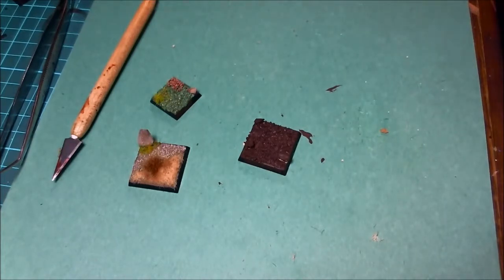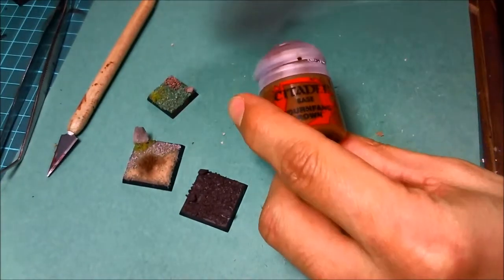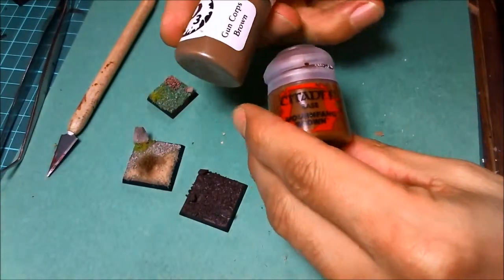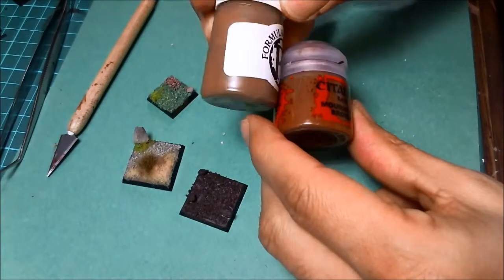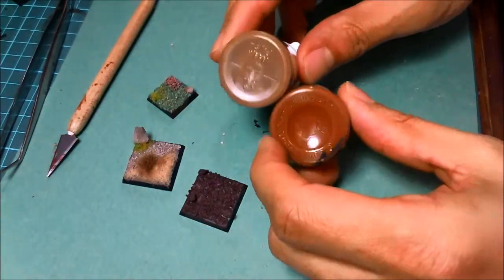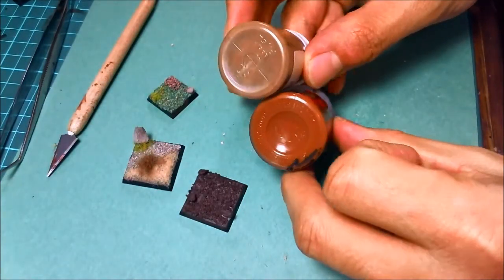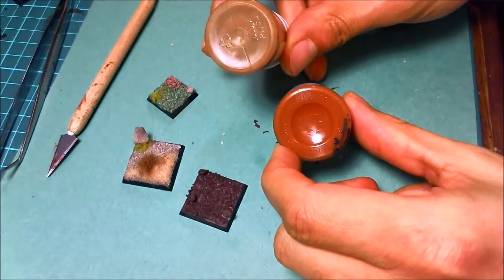I'm going to give you a little example here. So we have Mournfang Brown from Citadel, and we have Gunkor Brown from P3. Now, these are both kind of a light brown. You'll see this is much more of an orange clay hue than this one is, okay?